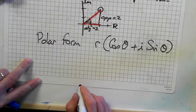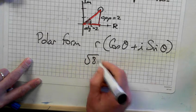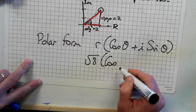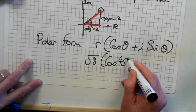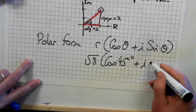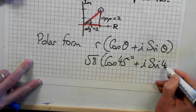Just fill it in. That's all you have to do. Square root of 8, cos 45 degrees, plus i sine 45 degrees.